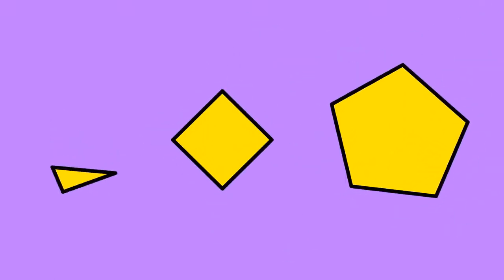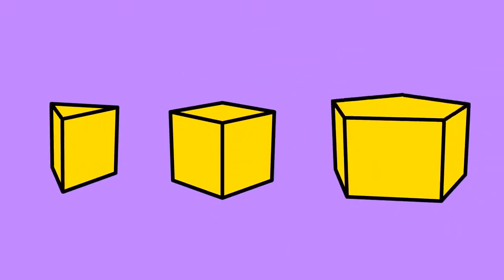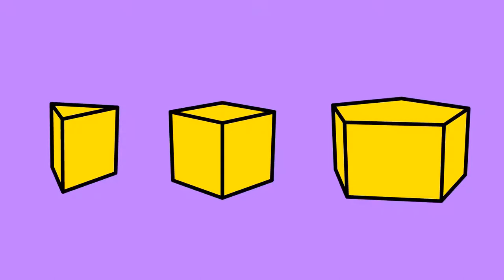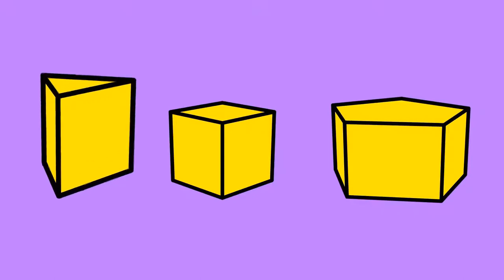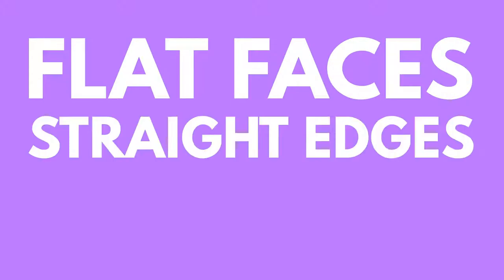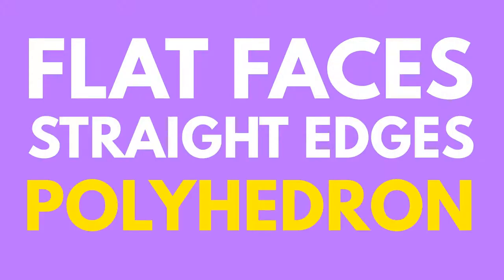2D shapes include the flat examples we've already seen such as a triangle, square and a pentagon. 3D shapes have multiple flat or 2D faces. A solid 3D object with flat faces and straight edges is called a polyhedron. Cubes, cuboids, prisms and pyramids are all examples of polyhedral shapes.